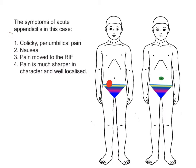Rebound tenderness, which can be felt in the right iliac fossa, involves stretching the peritoneum by pushing firmly down into the abdomen, and then suddenly releasing it, so that the parietal peritoneum suddenly receives a stretching sensation, which is very painful to the patient, so it has to be done very carefully.